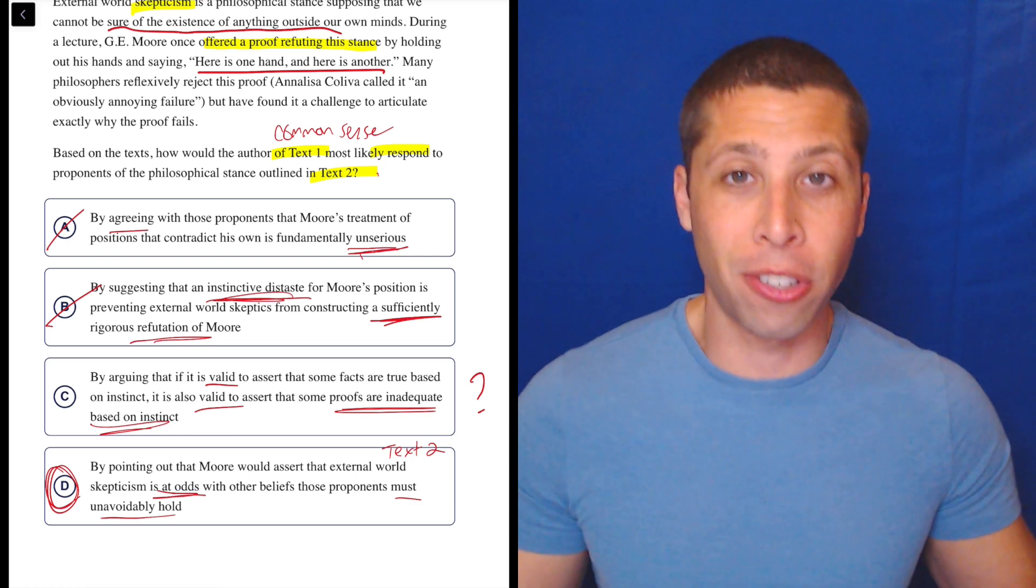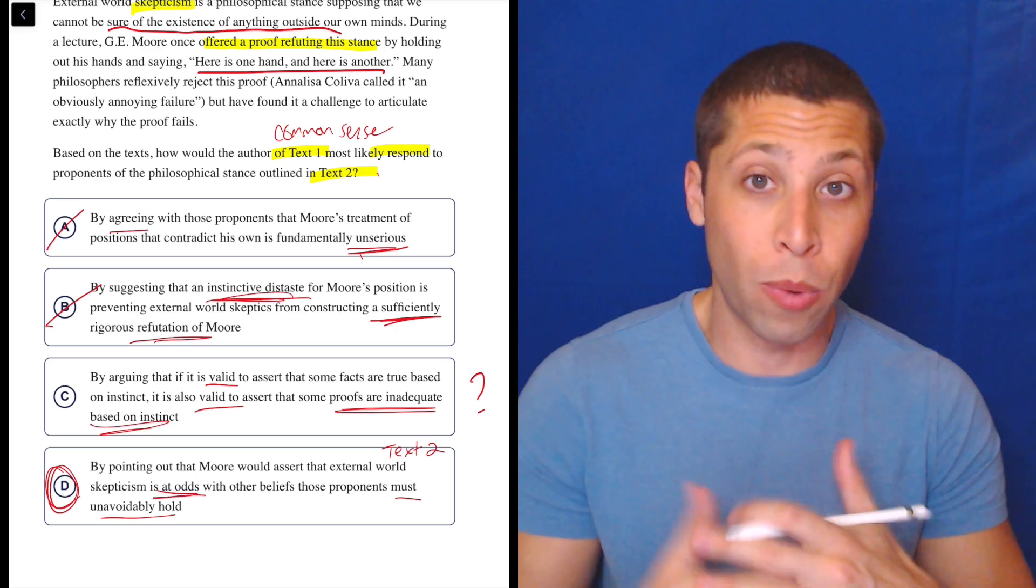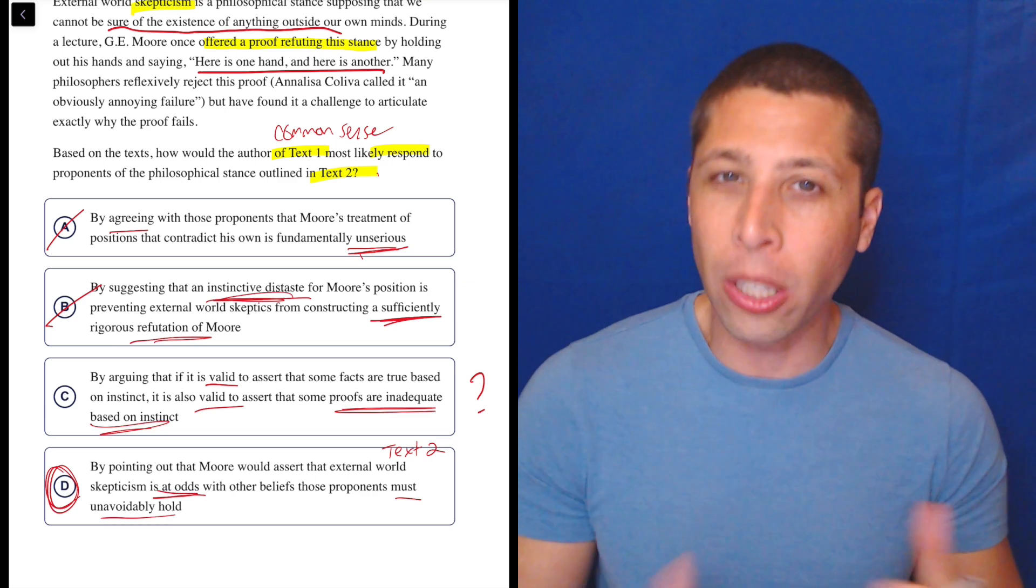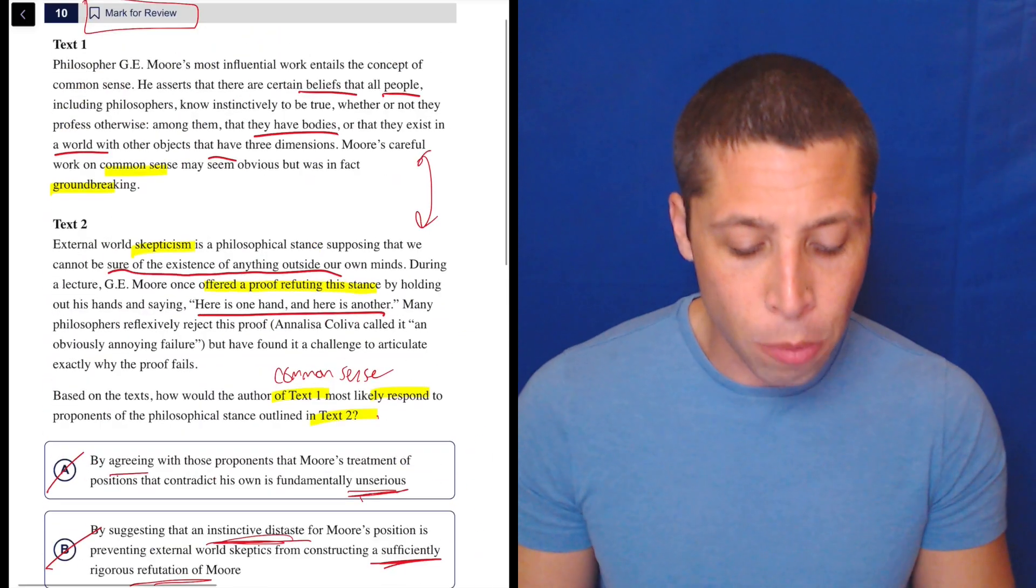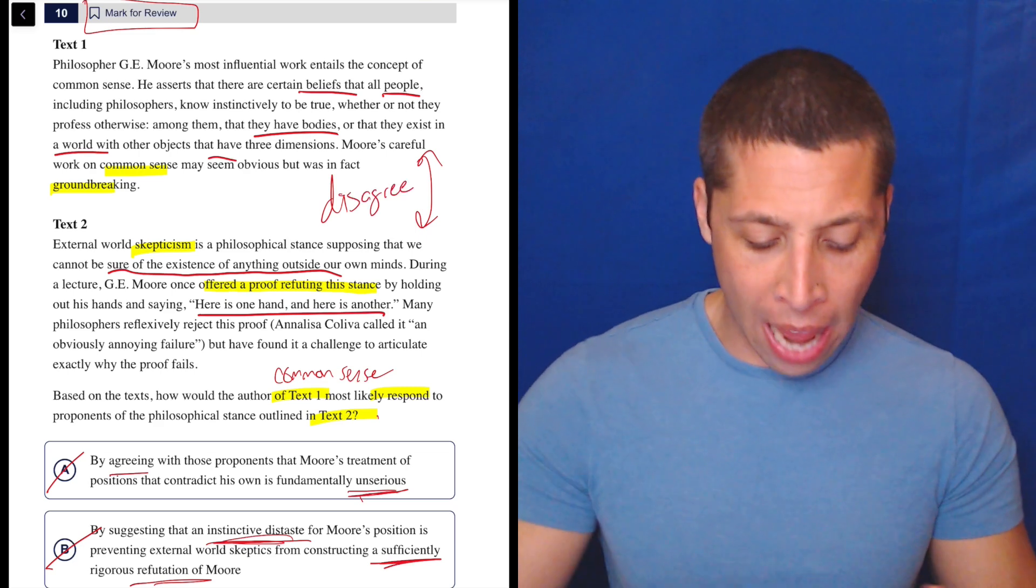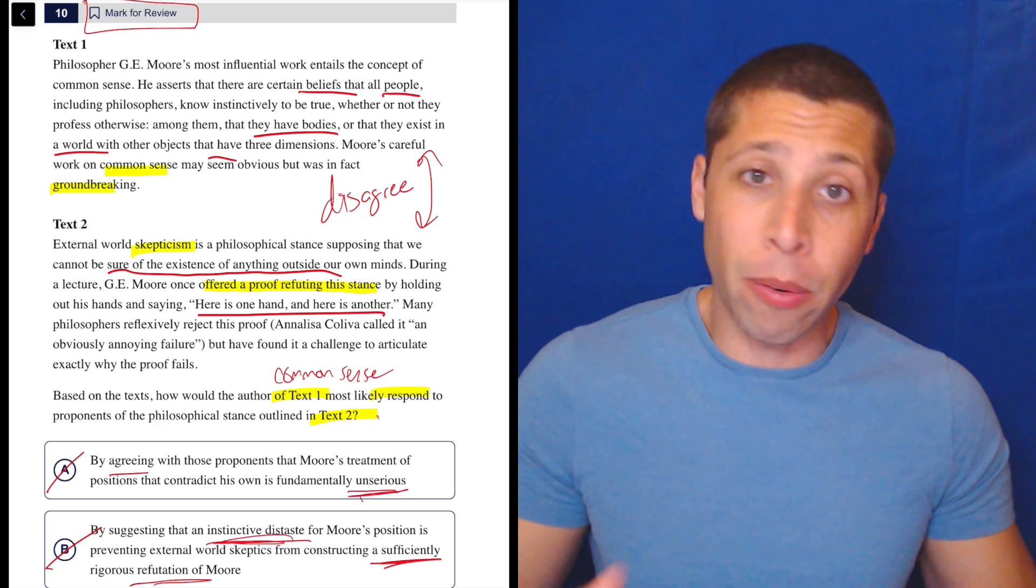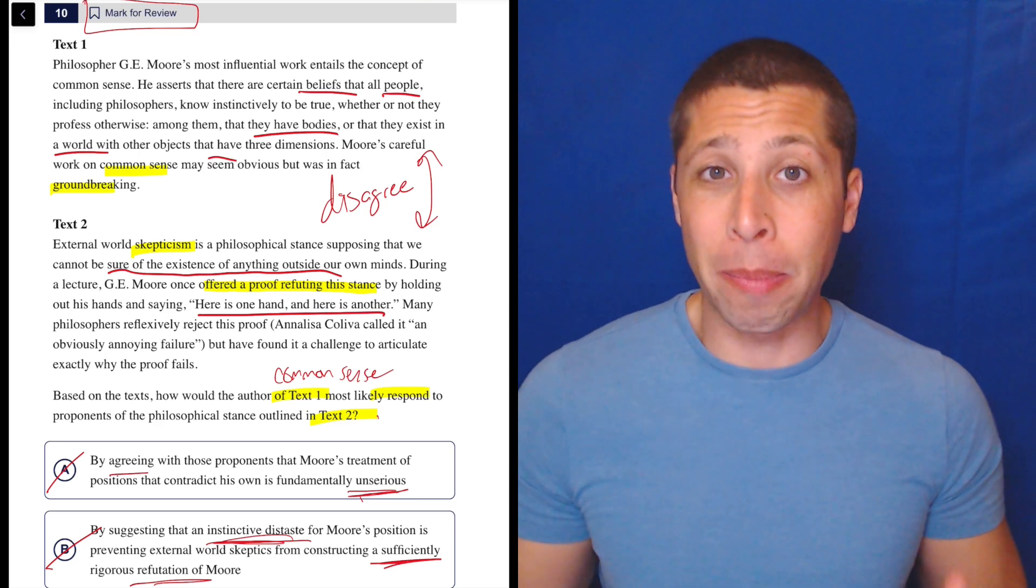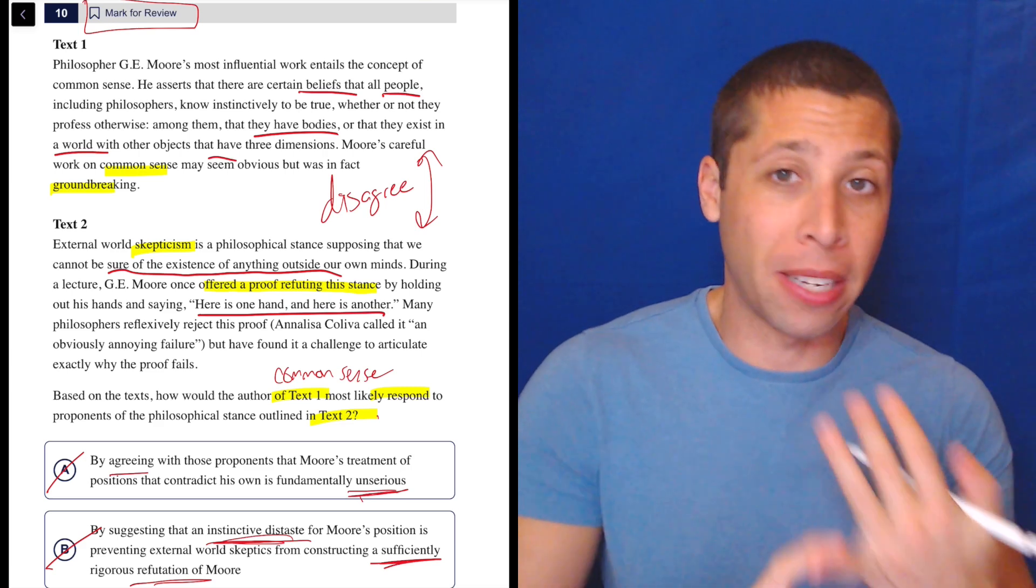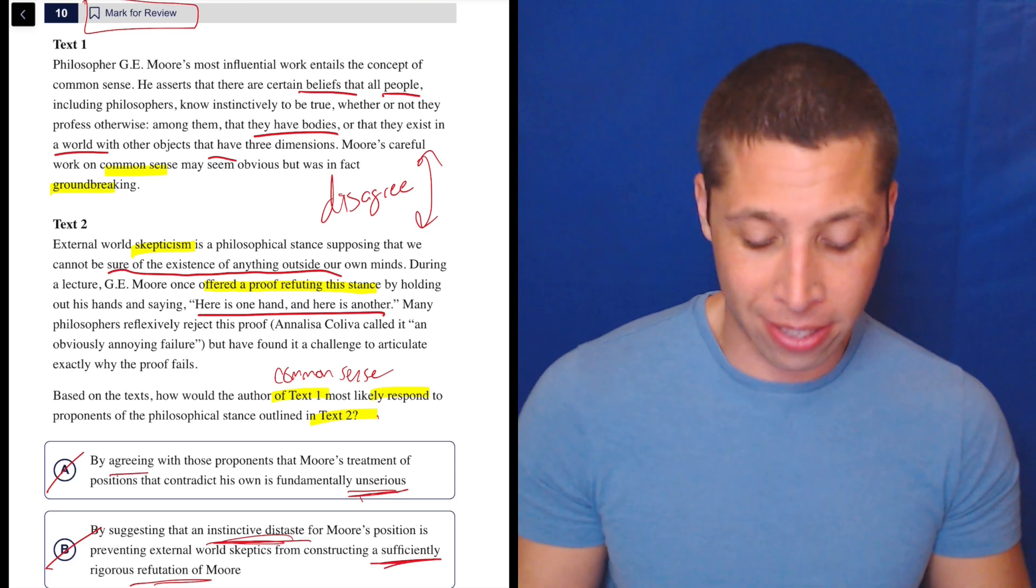But I think this just gets to something that we see in the science passages as well. It's like you can't be a master of all of these topics. You have to accept that you are going to be answering questions without really any underlying knowledge of the details. And that's okay because the thing that's really going on here is that these two passages show a fundamental disagreement. And when we're asked how would text one respond to these people, the simplest thing is like he would disagree. We can get specific about what the disagreement is, but focus on the disagreement part first. That is understandable whether the topic is philosophy or science or space or whatever. It doesn't matter. It's the same thing.